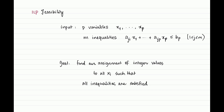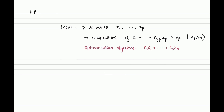That is, we want to find an assignment of integer values to each of the variables such that all of the inequalities are satisfied. That is the ILP feasibility problem. Sometimes you also work with an optimization version simply called integer linear programming: just like in the feasibility problem, we are given p variables and m inequalities, but on top of that you also have an objective function which you are trying to optimize.